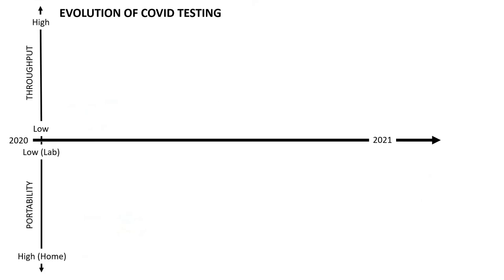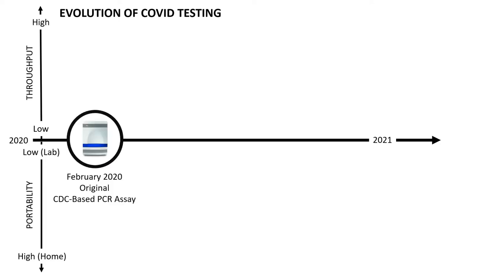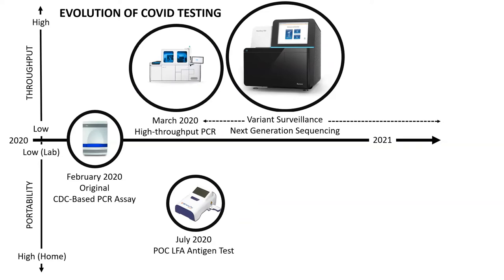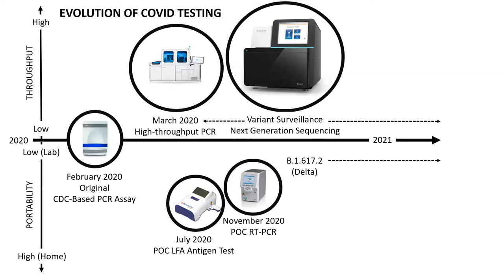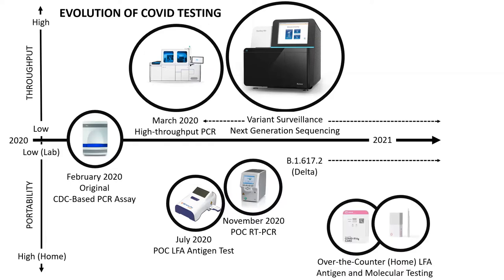Here is a quick evolution and summary of where we've come from and where we are today. We started with open-plate PCR, then saw the emergence of automated systems, sequencing, early lateral flow antigen tests, rapid point-of-care PCR, and now home molecular and lateral flow assay testing for COVID. We also have high-throughput antigen testing on some platforms, used at Davis for return-to-work testing.